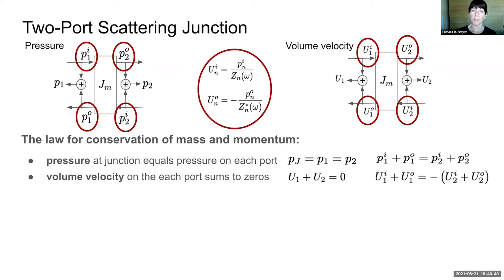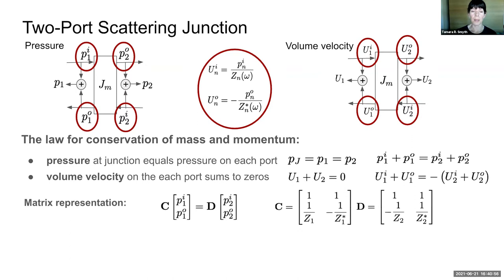Using the relationship between volume velocity and pressure, given here by one over the characteristic wave impedance, which for conical sections is a complex function of frequency, we arrive at our matrix representation that allows us to express the input-output wave components on the left port as a function of those on the right port.